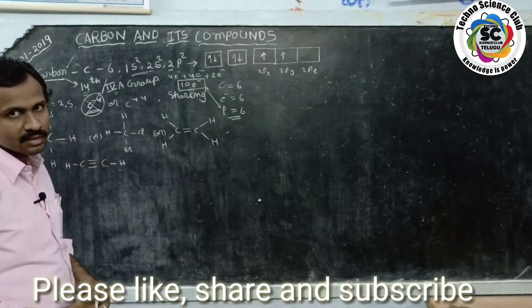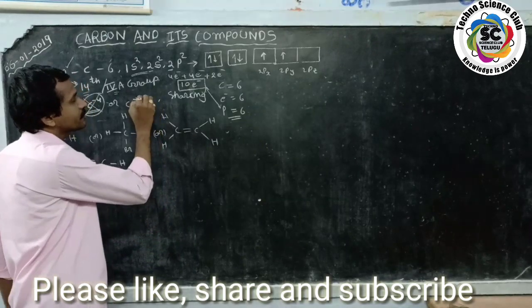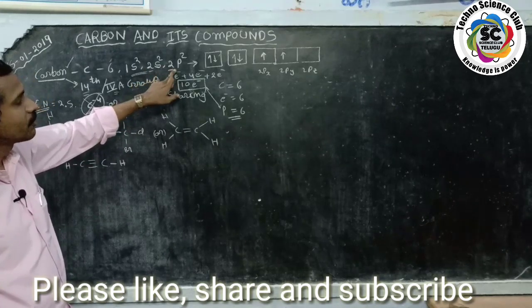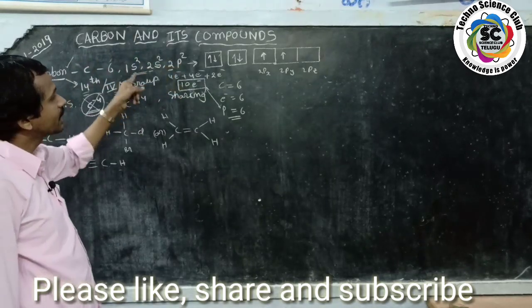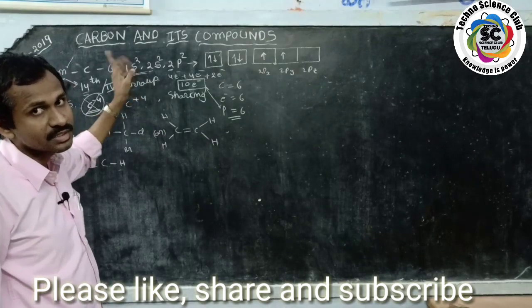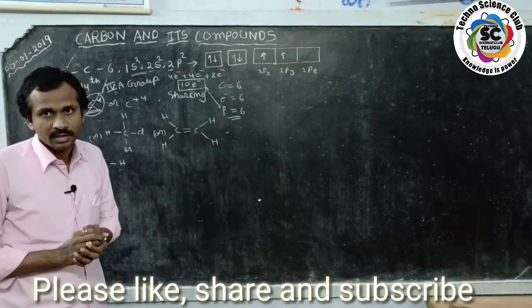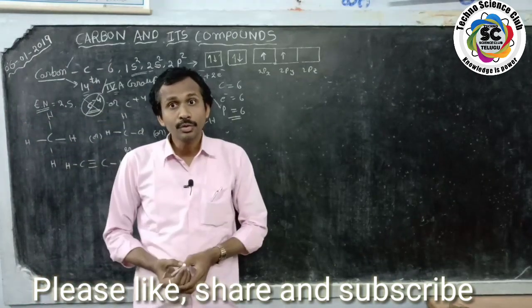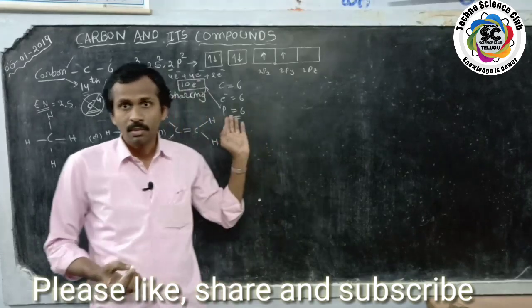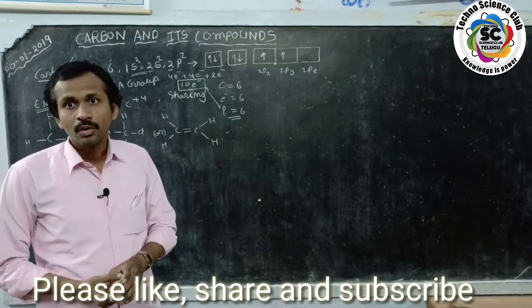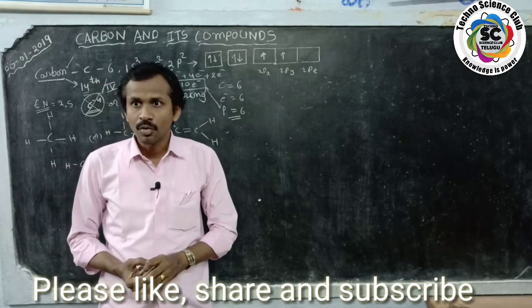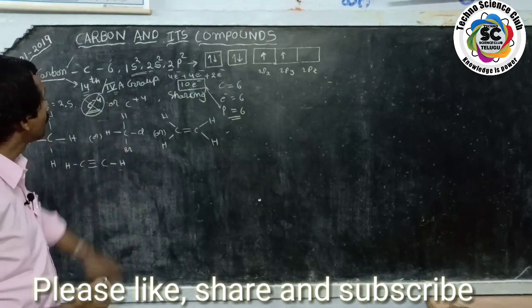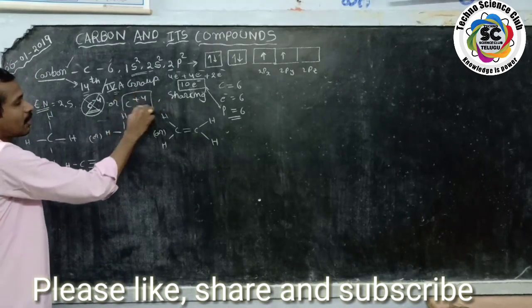The second way: if carbon loses four electrons from its outermost shell, it would get the stable electronic configuration of helium (1s²) and become stable. But there is also a problem here. It cannot lose electrons because a huge amount of energy is required to lose four electrons. Carbon does not have that much energy, so carbon cannot lose four electrons and cannot form C⁴⁺.